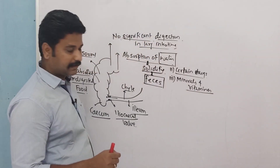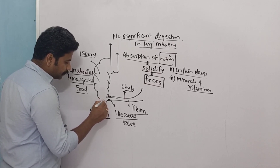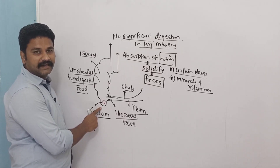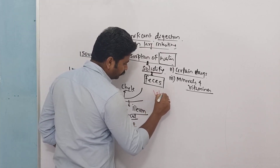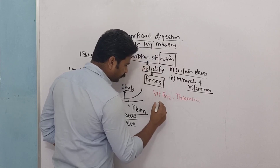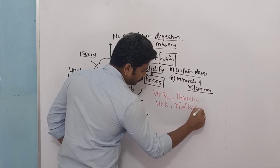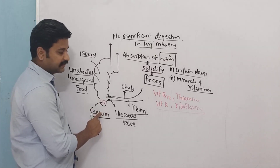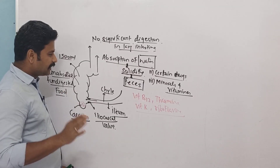In the large intestine, particularly in the region of the cecum, there are some commensal bacteria which are part of the normal flora of our large intestine. These commensal bacteria help in the synthesis of vitamins — for example, vitamin B12, thiamine, vitamin K, and riboflavin. All these vitamins are produced in our body with the help of these commensal bacteria and are also absorbed in the large intestine.